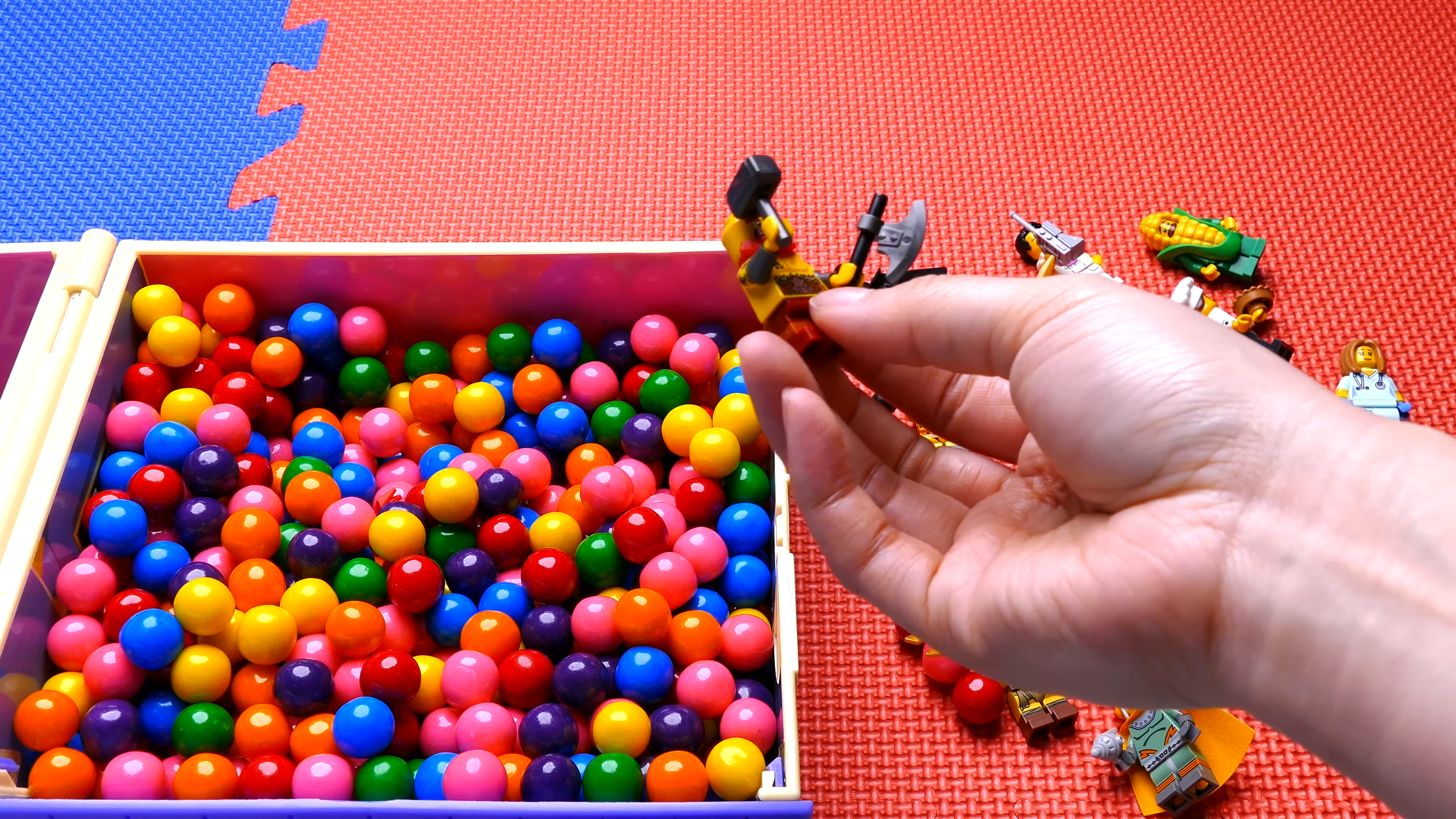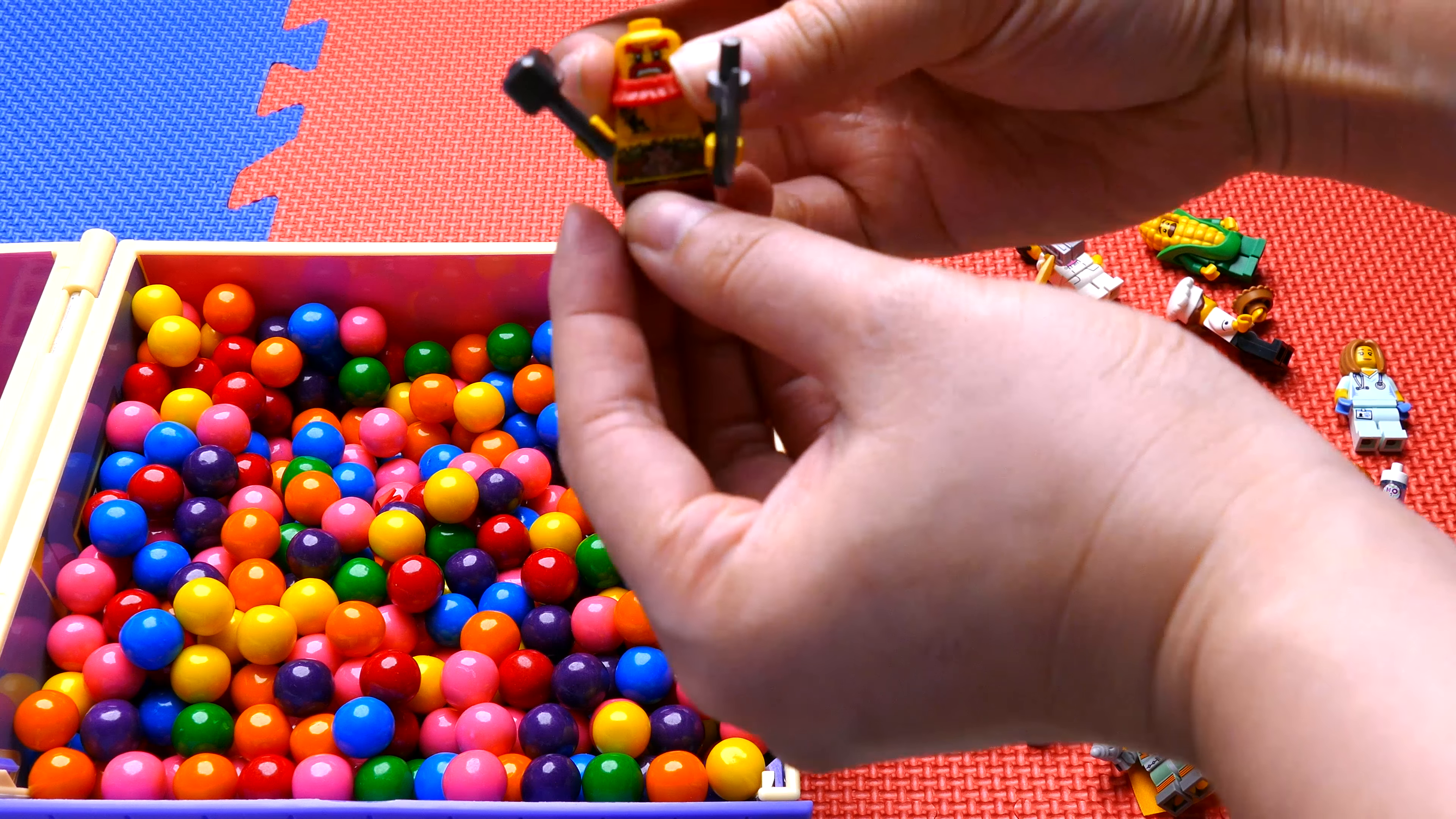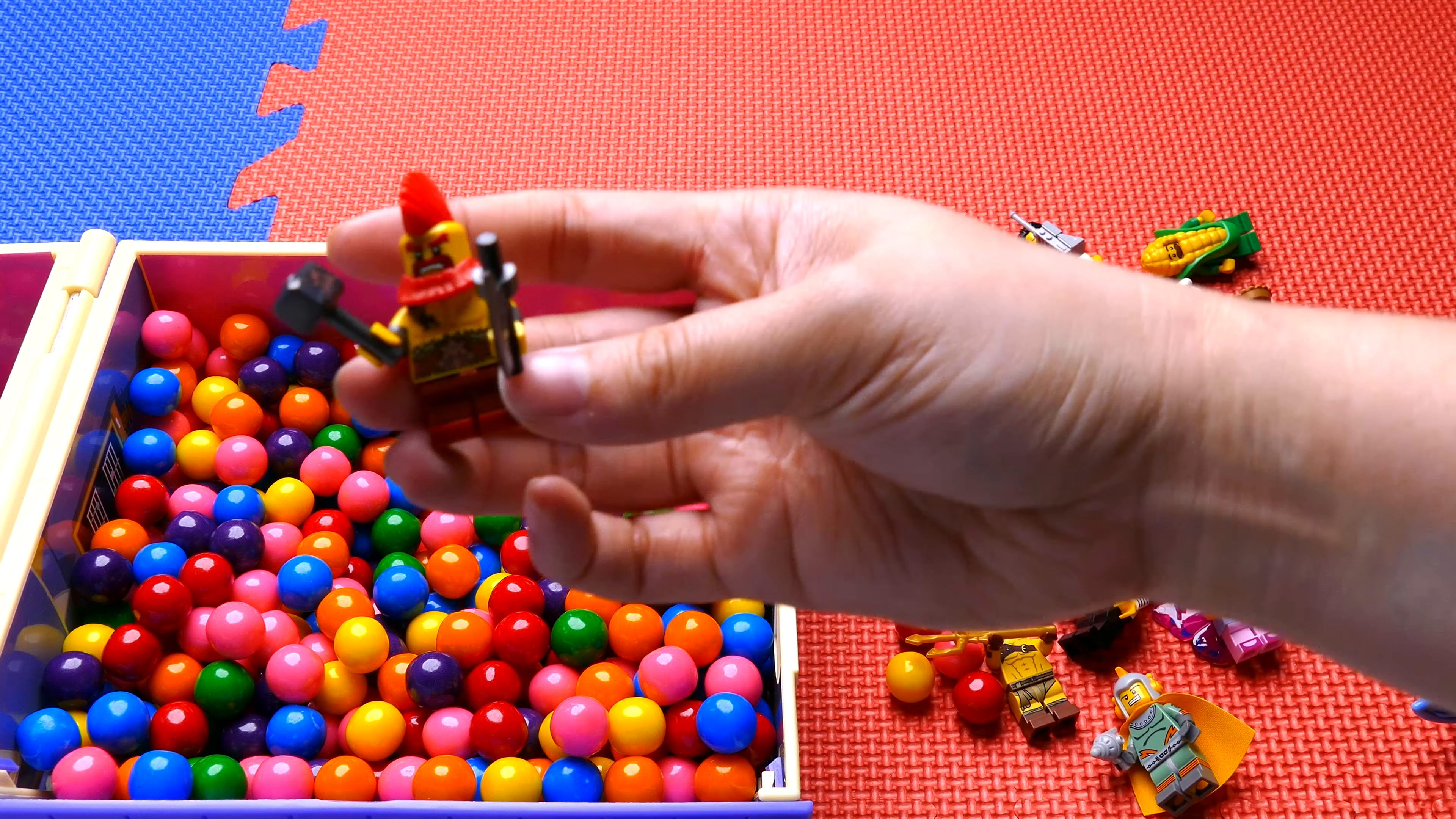This is Battle Dwarf. He has a hammer and he has an axe. He's strong too, but not as strong as Strongman. He has a red beard and a tattoo on his chest. Look what I just found, this goes on with Battle Dwarf on his head. He has a mohawk.